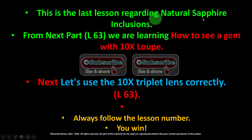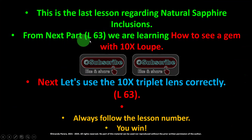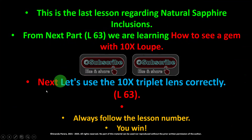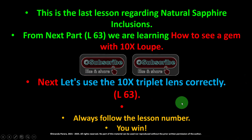This is the last lesson regarding natural sapphire inclusions. We are moving next to heated sapphire inclusions. Before that, in lesson 63 we are learning how to use the 10x loupe correctly — how to see the gem with a 10x triplet lens. Always follow the lesson numbers. Please subscribe and share.